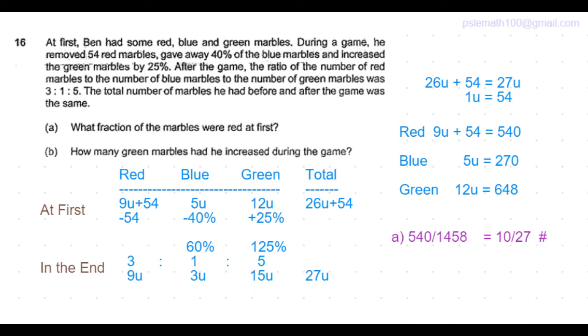We also noticed that the red marbles was 9 units plus 54. The value of 1 unit is 54. So the red marbles was 10 units, blue marbles were 5 units and green marbles were 12 units. That's a total of 27 units. So that's 10/27. That's one more method to do part A of the question.